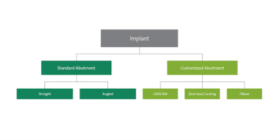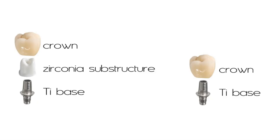Here's a simplified flow chart on conventional versus standard abutment versus customized abutment. Standard abutments, also called prefab abutments, come in straight and angled versions depending on the clinical scenario. Customized abutments can come milled CAD-CAM, or cast and tie-based. Tie-based is a newer term you definitely need to know because it's becoming the primary foundation for implant prosthetics due to its clinical effectiveness. Most importantly, it's a lot cheaper than milled or casted abutments.